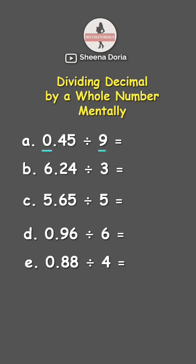First, let's divide 0 by 9, which is 0. Put the decimal point. Then 4 divided by 9 cannot be done, so that's 0. Now let's get the next digit, so that's 45 divided by 9, which is 5. Our answer is 0.05.